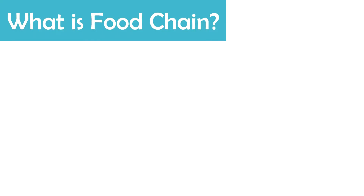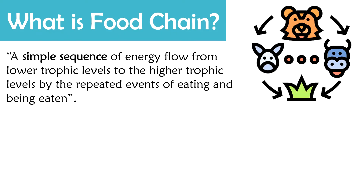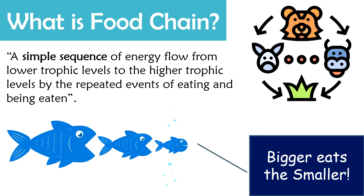Firstly, let us understand what is a food chain. We can define food chain as a simple sequence of energy flow from lower trophic levels to the higher trophic levels by the repeated events of eating and being eaten. The food chain is the most elementary and uncomplicated way to represent the energy flow. It is a linear pathway that manifests the movement of nutrients and energy from one trophic level to the next.